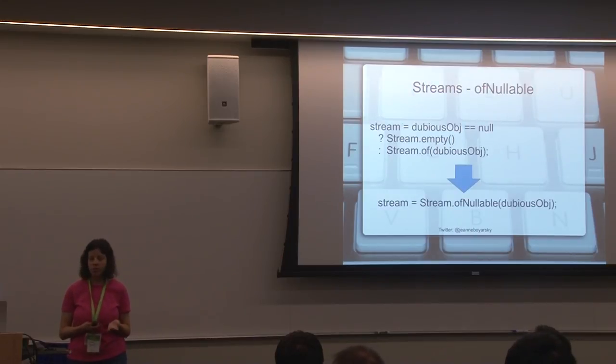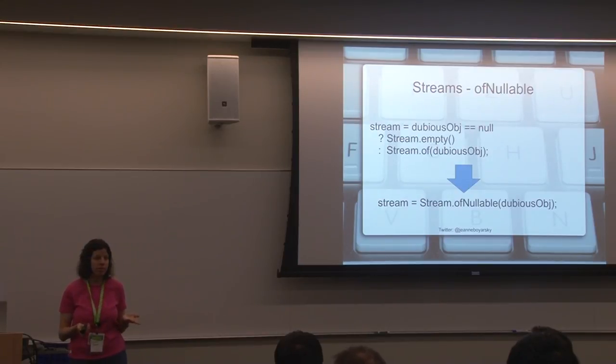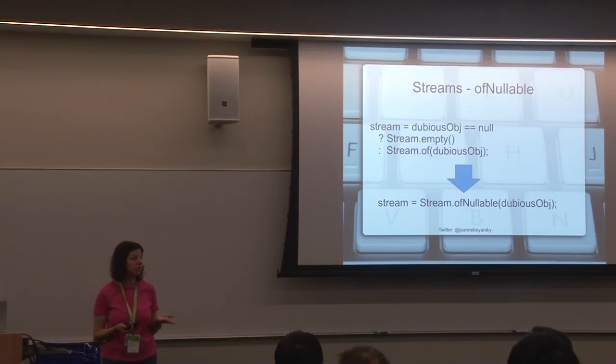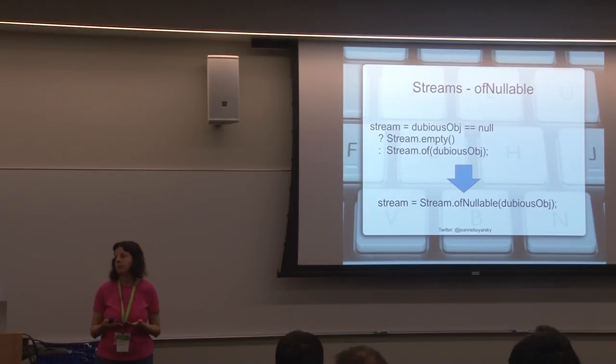Of nullable is far easier. If you get in the habit of using of nullable, you don't have to worry about whether a dubious object is null. You just know that I now have a safe stream, just like we do with optional. When we're working with optionals in Java 8, we don't sit around scratching our heads. We call the proper optional method, and we're good. And the same thing here with streams now.